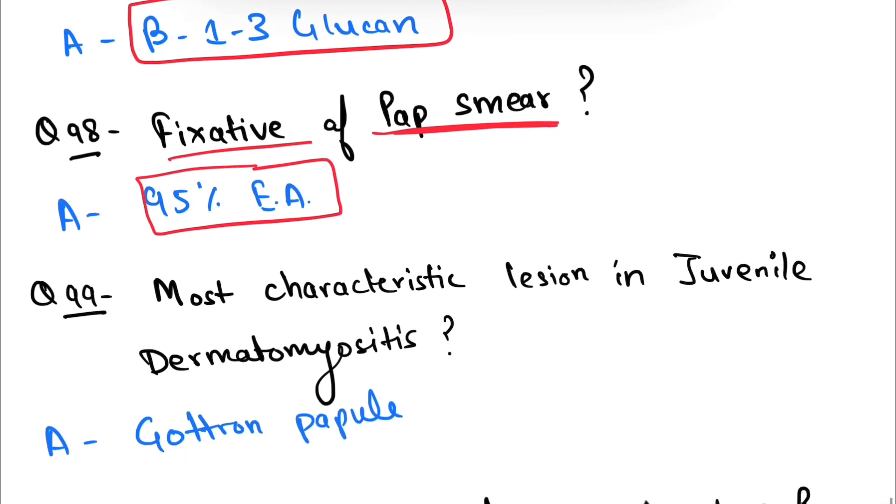Question number 99: most characteristic lesion in juvenile dermatomyositis. This is Gottron's papules.